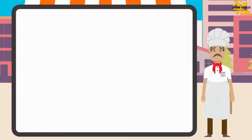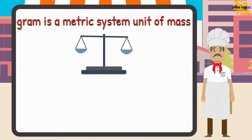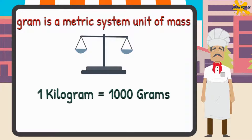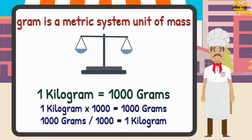Did you know? Gram is a metric system unit of mass, and it is used to measure weight. A kilogram is a unit of mass equaling 1000 grams. So you need to multiply the value in kilograms with 1000 to get the value in grams. And if you divide the value in grams by 1000, you get the value in kilograms.